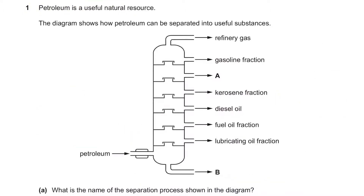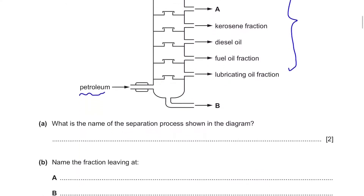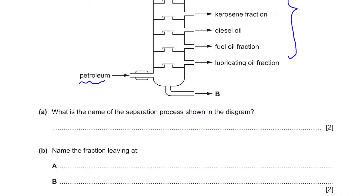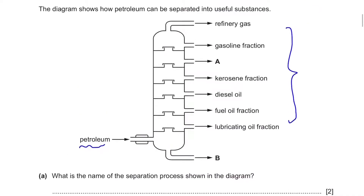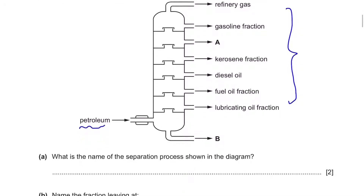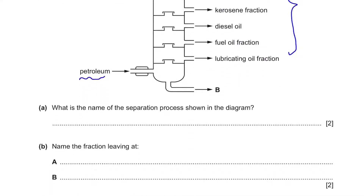The first question says petroleum is a useful natural resource. The diagram shows how petroleum can be separated into useful substances, and we have a list of products produced from this process. What is the name of the separation process shown in the diagram? This diagram is commonly used as an example of fractional distillation. So the answer for part A is fractional distillation.